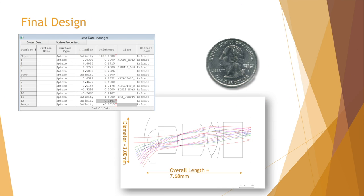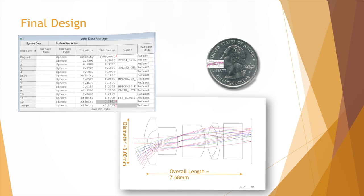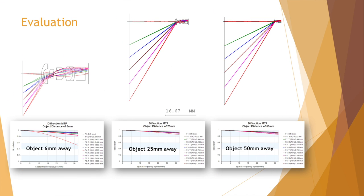The final design has an overall lens length of 7.68 mm and the largest lens diameter is 3 mm — smaller than a quarter coin. To further verify that this optical system works well, we change the object distance to 15 mm, 25 mm, and even push to 6 mm, which is 1 mm shorter than our target distance. The modulated transfer function fully meets our expectation of having more than 50% contrast at 32 line pairs per millimeter.